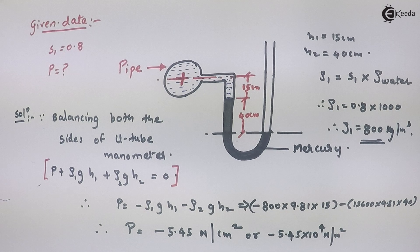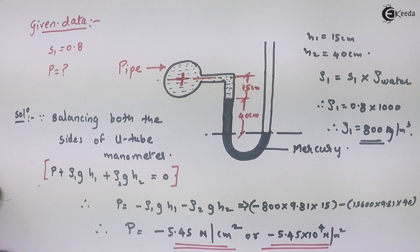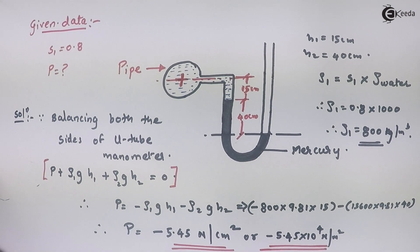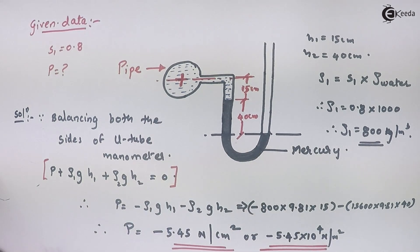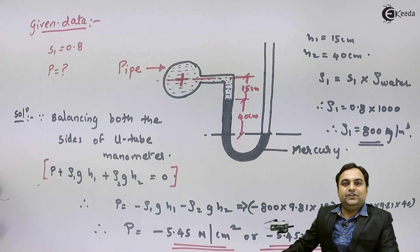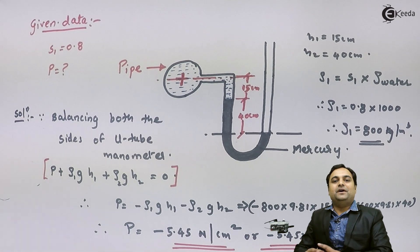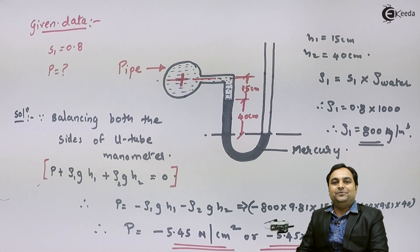As we can see, our answer is negative. If the answer is negative, it means that the pressure inside the pipeline is vacuum pressure. So in this video we have seen how to calculate vacuum pressure by using a simple U-tube manometer.